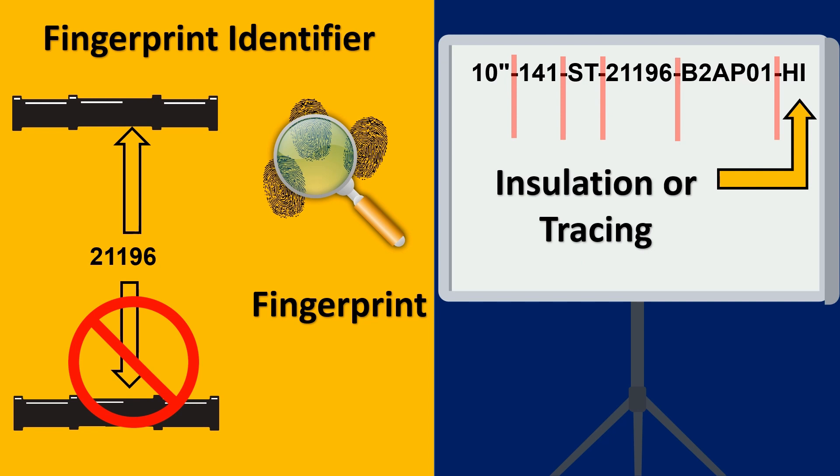The next important thing is the insulation or tracing which is kept at the last. So for example the HI stands for heat insulation. There would be something like cold insulation. There is something like personal protection or no insulation etc. So that is mentioned in the end.